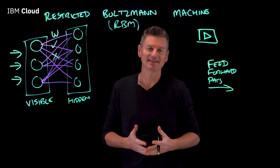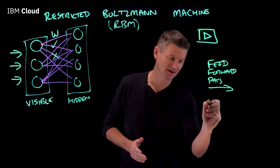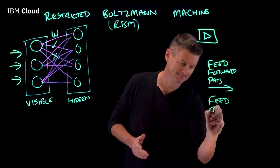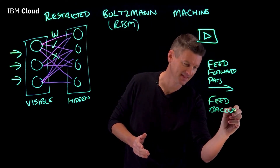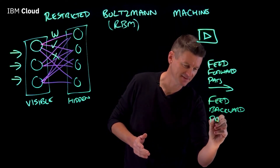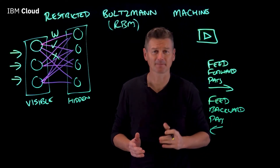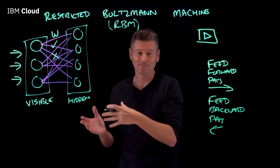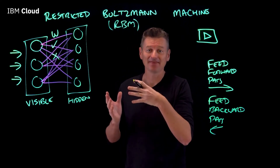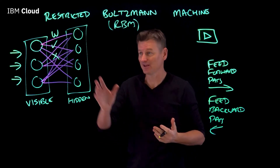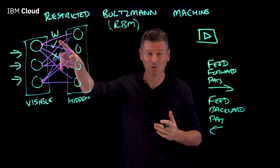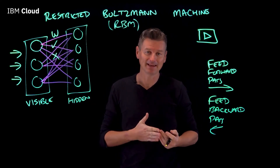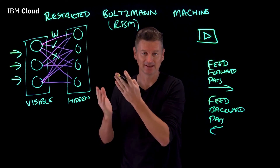The second phase is the feed-backward pass. This pass is used to determine how weightings should be adjusted, and it does three things: it adjusts the weights, it adjusts the biases, and it logs the probability for every edge between the layers.